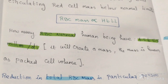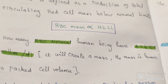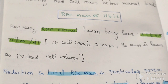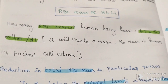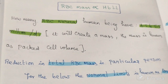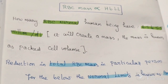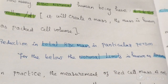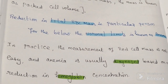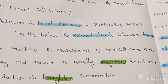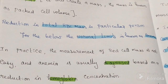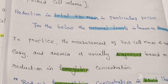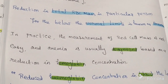If hemoglobin decreases, RBC mass is also reduced. Anemia is defined as reduced hemoglobin concentration in blood below the lower limit of the normal range for any age and sex of the individual.